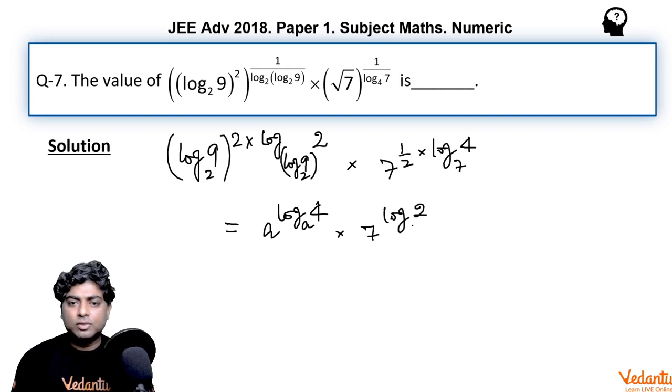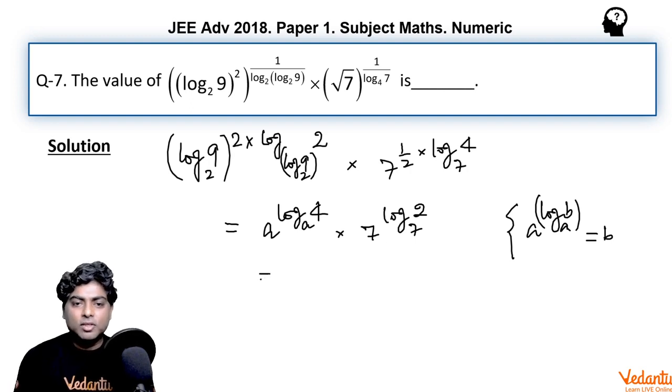Now there is a property: a raised to the power log b to the base a is nothing but b. So here in both terms I can write directly 4 here, so the final answer to this question must be 8.